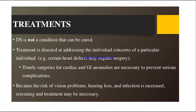Down syndrome is not a condition that can be cured. Treatment is directed at addressing the individual concerns of each patient. Timely surgeries for cardiac and gastrointestinal abnormalities are necessary to prevent serious complications. Because there are vision problems, hearing loss, and increased infections, screening and treatment of such conditions — including eye screening for cataract and hearing tests — is necessary.